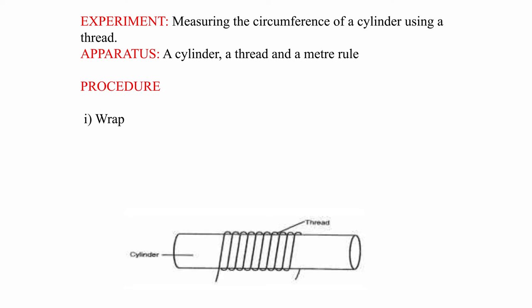Procedure. 1. Wrap a thin thread say 10 times around the cylinder. 2. Mark with ink the beginning and end of turns as shown.